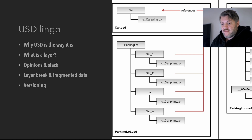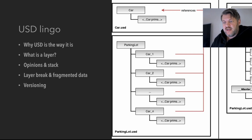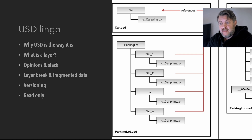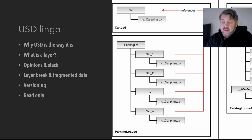There are things called asset resolvers that you can use to handle versioning, but you have to code them yourself — nothing exists out of the box. Another important aspect is that USD is read-only for the most part. If layout exports a cube and lighting uses it for alignment, then another department deletes it, the lighting artist's scene breaks. The idea is you cannot delete or rename things because someone else might depend on them. Once it's exported, it's out there — this is a feature, not a bug.